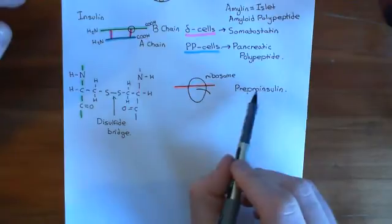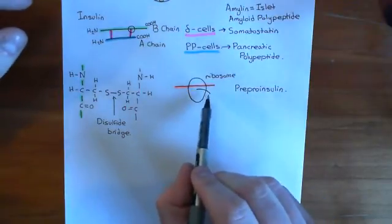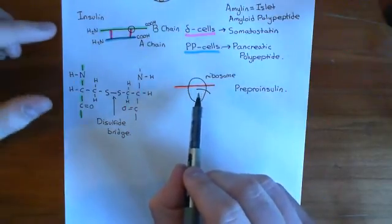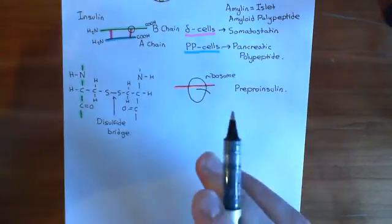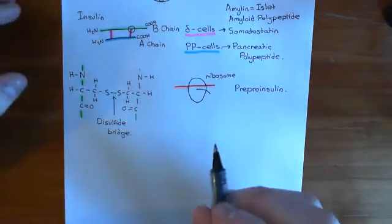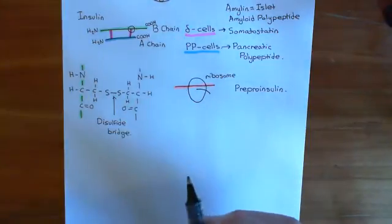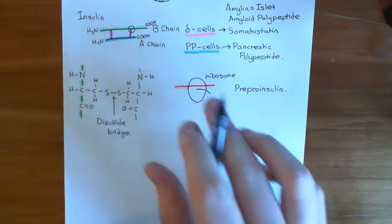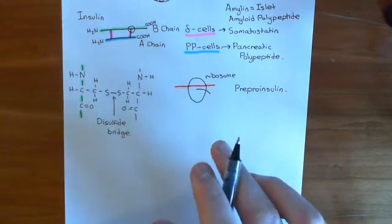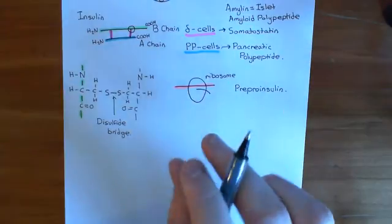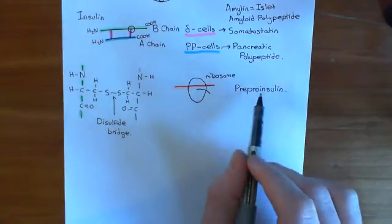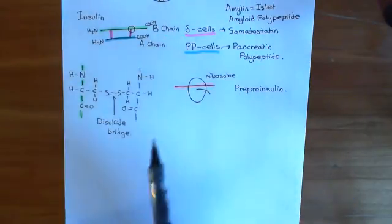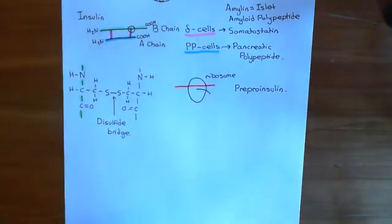Whilst pre-proinsulin is still being translated, the process will be halted for a moment because a co-translational process is going to occur — it's going to target the pre-proinsulin to the ER. So pre-proinsulin is going to be targeted to the ER co-translationally.